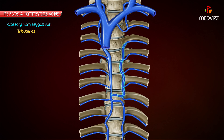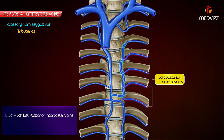Tributaries. The following are the tributaries of the accessory hemiazygous vein: 5th to 8th left posterior intercostal veins, and occasionally, left bronchial veins.